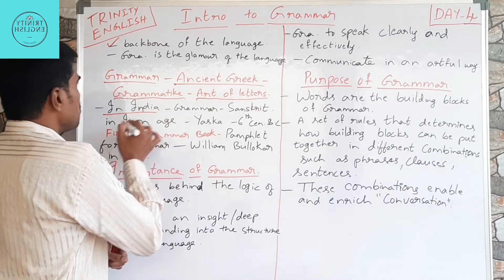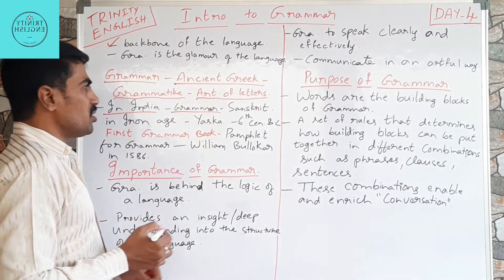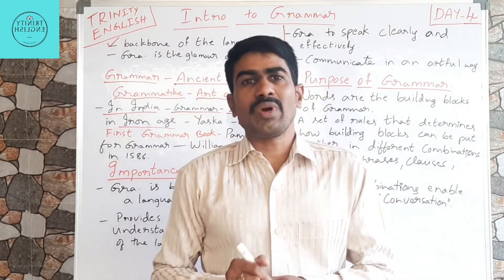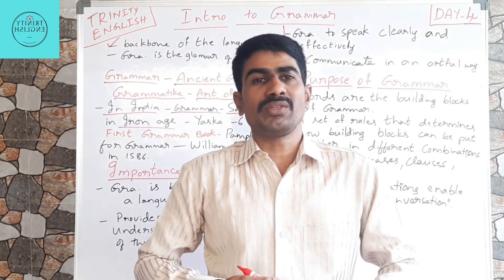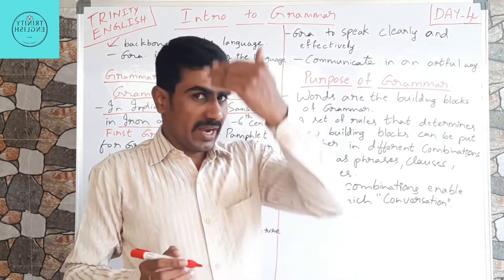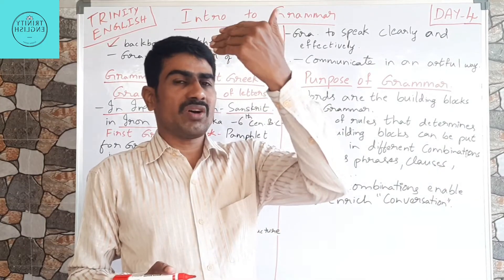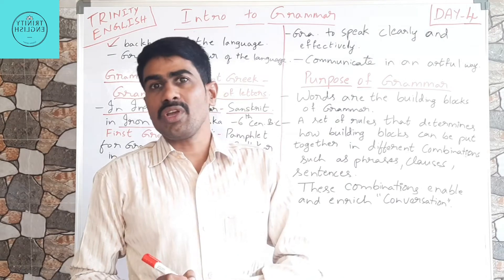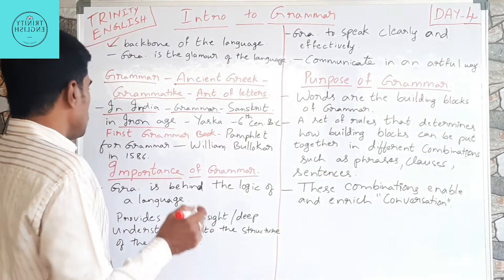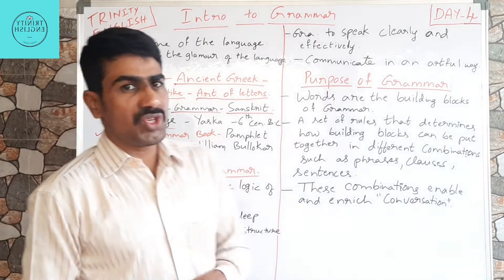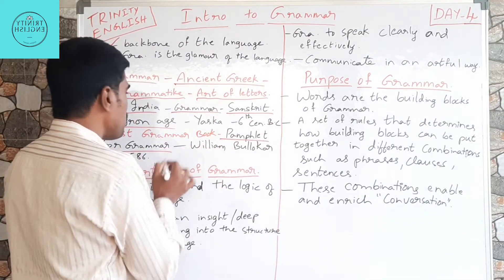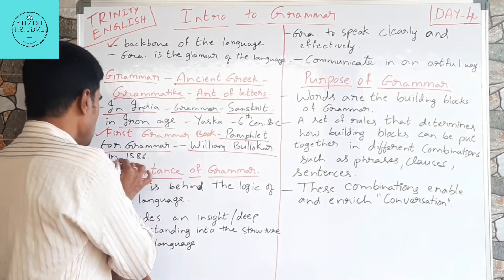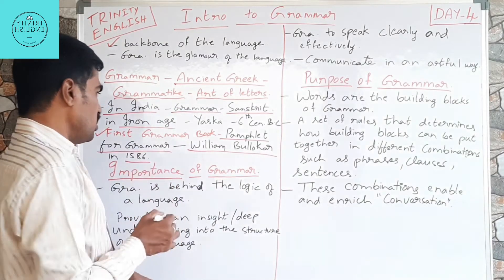In India, the word grammar first originated in Sanskrit during the Iron Age. The person who brought it to the people was Yaska, in the sixth century BC. Thereafter, the grammar of the fourth century, the third century, and so on continues the grammatical history of India. The first grammar book, known as 'Pamphlet for Grammar,' was written by William Bullokar in the year 1586.